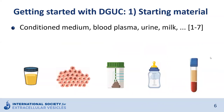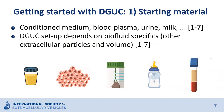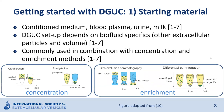Density gradient ultracentrifugation is compatible with different starting materials, including conditioned cell culture medium, blood plasma, urine, stool, and milk. The setup is defined by the biofluid of interest; for example, the sample loading approach — top or bottom loading — depends on other non-vesicular extracellular particles present in the biofluid. Pre-processing steps can be required. In practice, density gradient ultracentrifugation is commonly used in combination with other methods, such as a concentration step using ultrafiltration or precipitation to reduce the volume and make it compatible with loading on a density gradient.